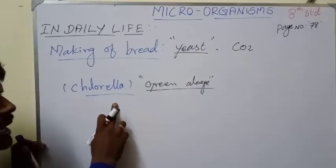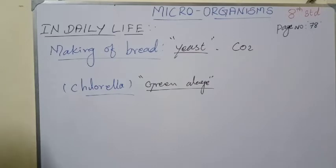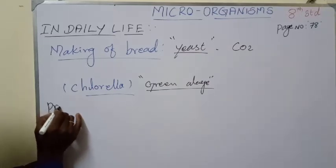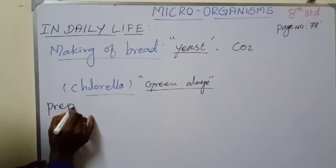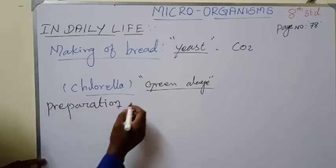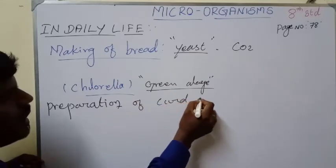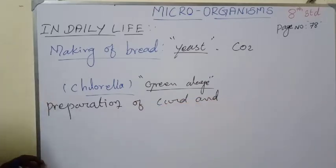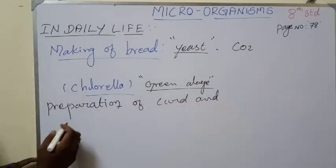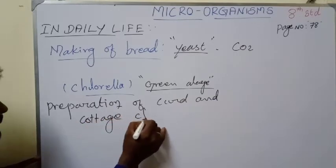Another microorganism used in daily life is chlorella, which is called green algae. Chlorella appears in green color because of the presence of green pigment. Next, we look at the preparation of curd and cottage cheese.